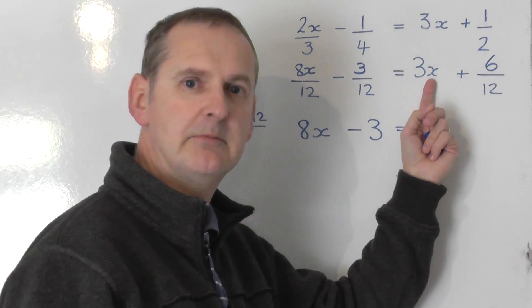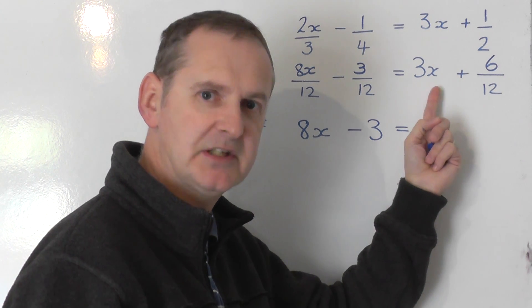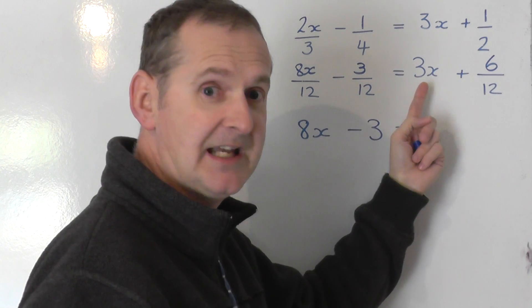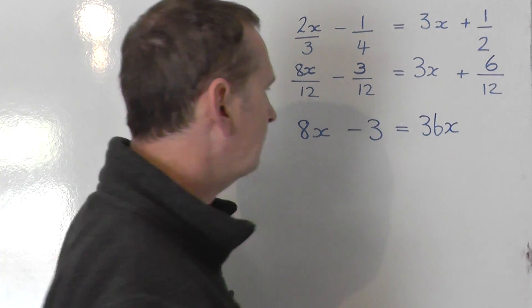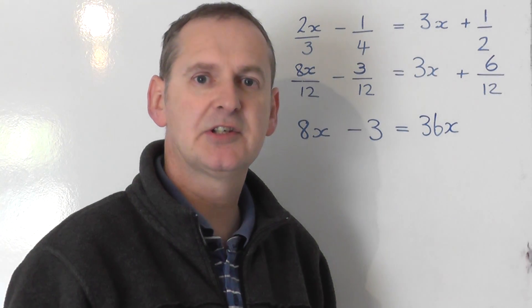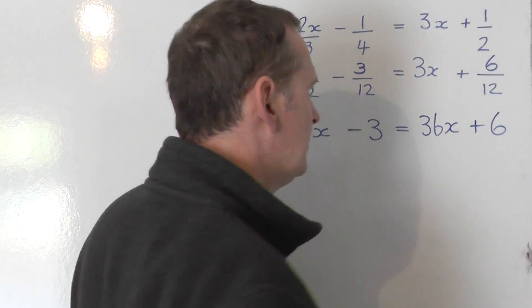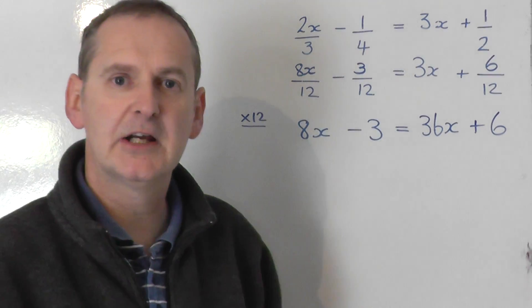Don't forget, you've got to times this by 12. That's the biggest mistake people make, forgetting to times this by 12. That doesn't stay as 3x. 3x gets times by 12. It becomes 36x. And then you times this by 12 as well. The plus 6 share by 12. If you times it by 12, you just get the plus 6, which is the top line of that fraction. So there you go. We've got rid of all the fractions now.